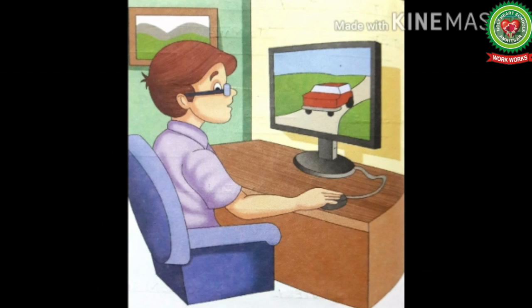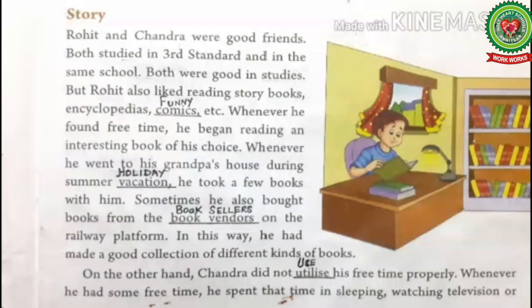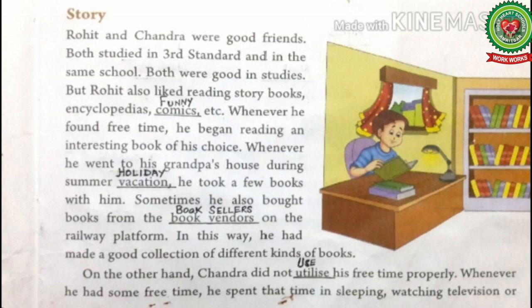Now students, open page number 17 and let's read the story. Rohit and Chandra were good friends, both studied in third standard and in the same school. Both were good in studies, but Rohit also liked reading story books and encyclopedias — we have already discussed that encyclopedias means books of knowledge. Now underline the word 'comics' and write down its meaning: funny books.